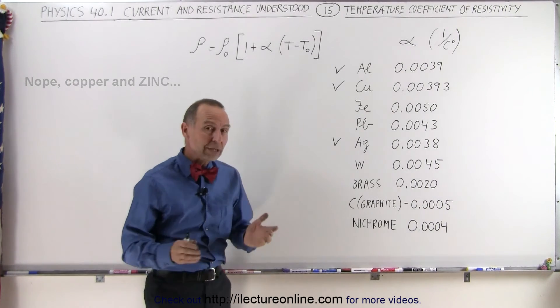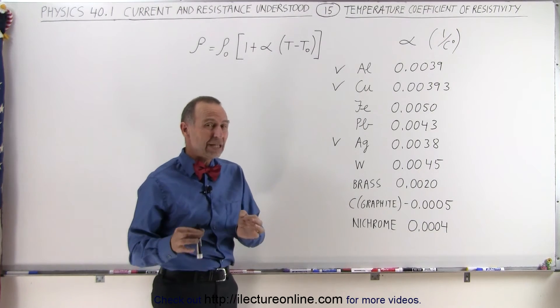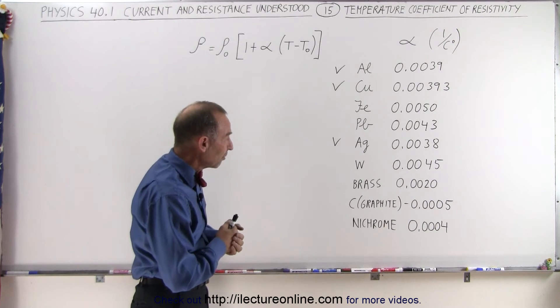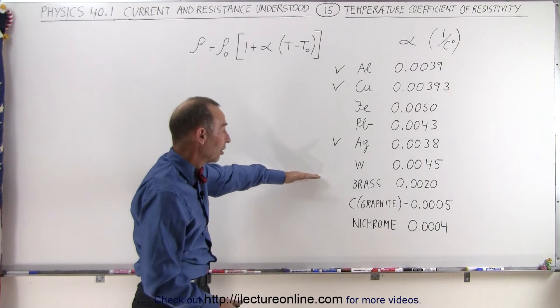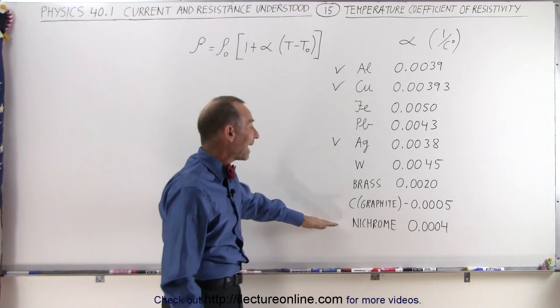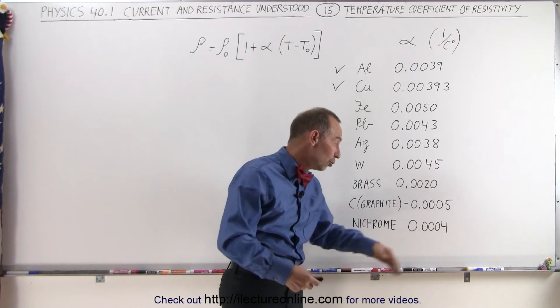Then when you start looking at other substances such as brass and graphite, you can see that the temperature coefficients of resistivity are quite different. For brass, which is an alloy, it's about half what it is for a typical metal. For nichrome it's far less, and so nichrome can be used to resist the changes in resistivity at large temperature changes.